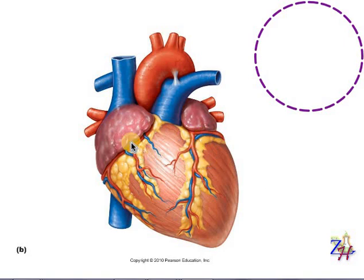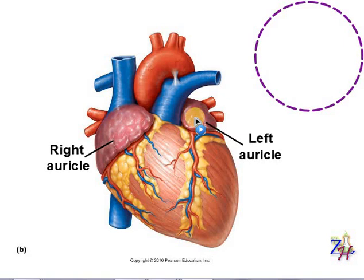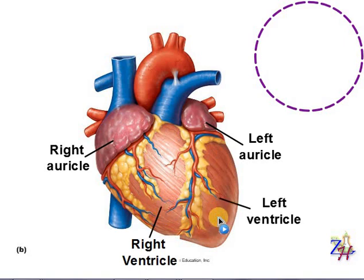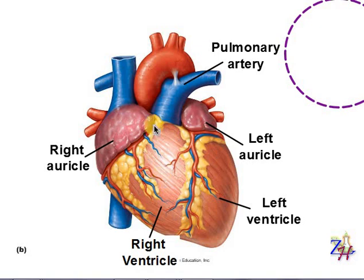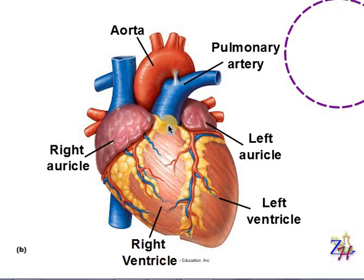Let's learn more about the parts of the heart. These are the two auricles — this is the right auricle and this is the left auricle — and under the auricles are the ventricles: right ventricle and left ventricle. Regarding the vessels, you must always remember that the right ventricle is connected to the pulmonary artery — the pulmonary artery always comes out of the right ventricle. The vessel that comes out of the left ventricle is the aorta. So arteries — aorta and pulmonary artery — are always connected to the ventricles.